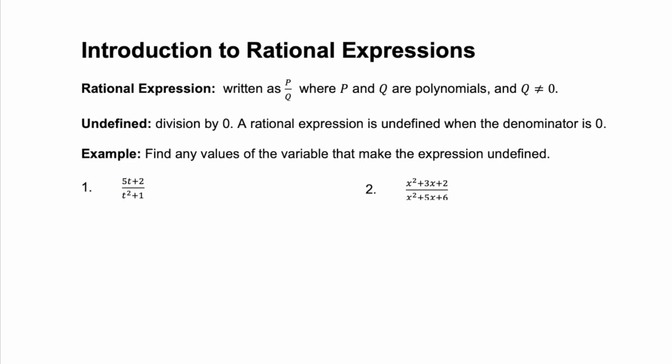Hey everyone, welcome back. Today we're going to talk about rational expressions. A rational expression is just a fraction, but the numerator and the denominator of this fraction are polynomials. Remember with a fraction, our denominator can't be zero. So if we have a rational expression that is p divided by q, the polynomial q can't equal zero. That's because division by zero is undefined. So a rational expression is undefined when the denominator is zero.